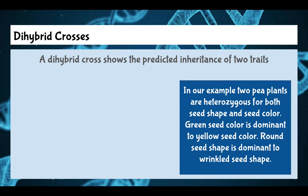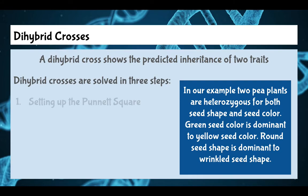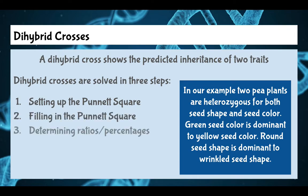What's the likelihood of having brown hair and brown eyes at the same time? We solve a dihybrid in three steps. The first step is setting up our Punnett square, the second step is filling it in, and the third step is determining ratios and percentages.